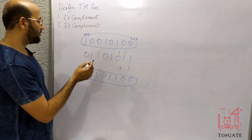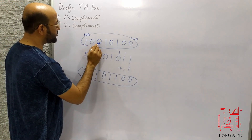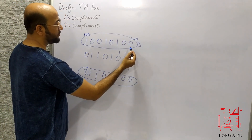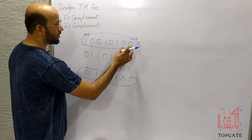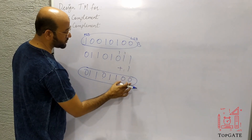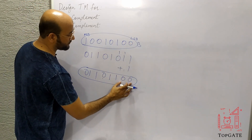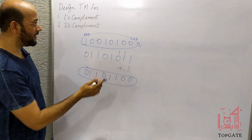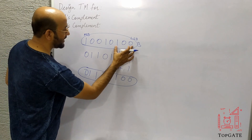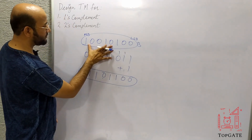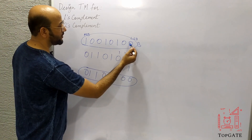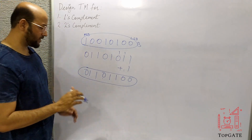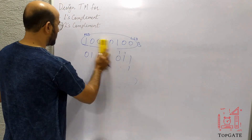The logic for the twos complement Turing machine: start from the left, skip all digits going right to the blank, then take a left turn. While going left, skip all trailing zeros, then skip the very first 1, and after that first 1, invert all remaining digits. This is the simple logic we'll apply.